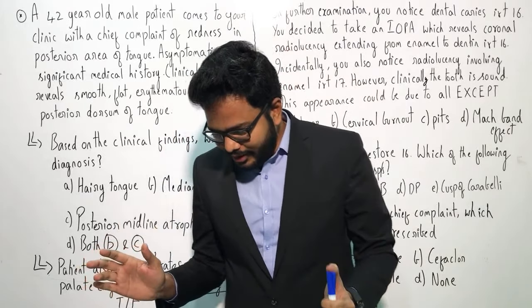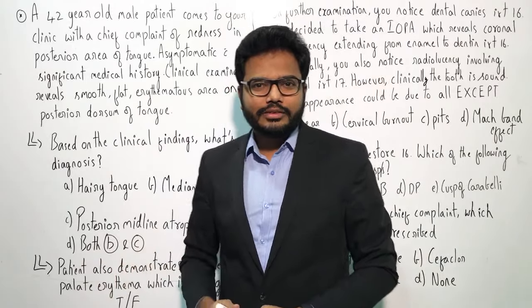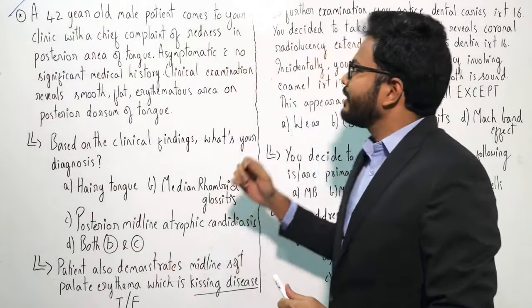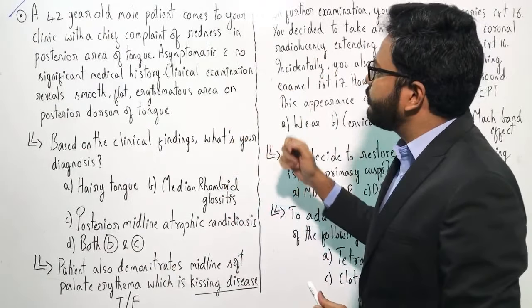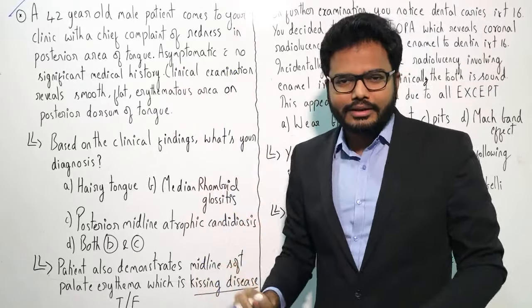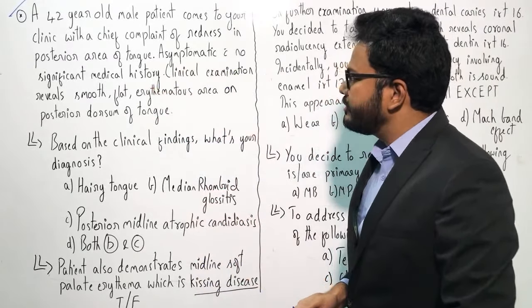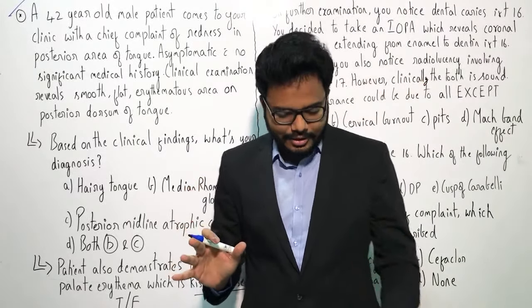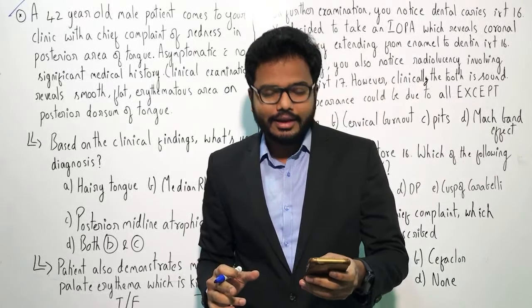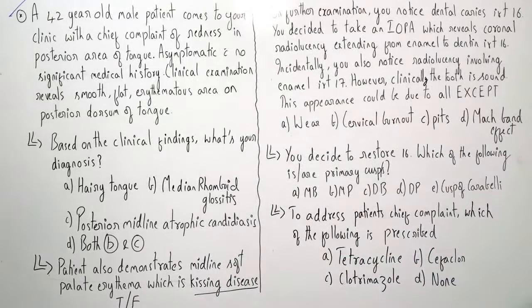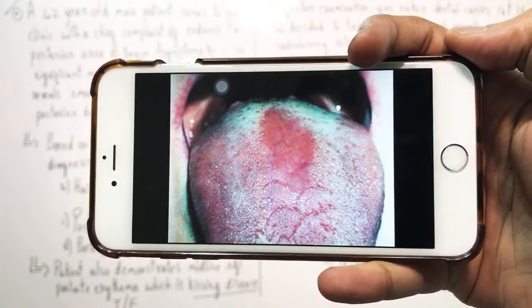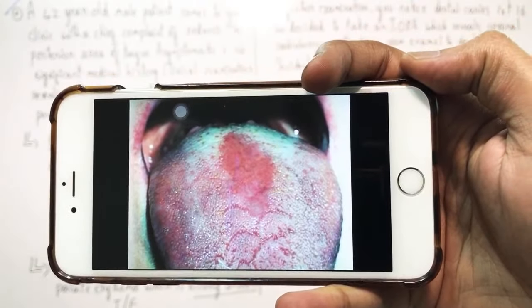So let's start with the given context. A 42-year-old male patient — remember it's a male patient — comes to your clinic with a chief complaint of redness in the posterior area of tongue. Asymptomatic, with no significant medical history. Clinical examination reveals a smooth, flat, erythematous area on the posterior dorsum of the tongue. I'll show you a clinical image — let me know what your diagnosis is based on the same.